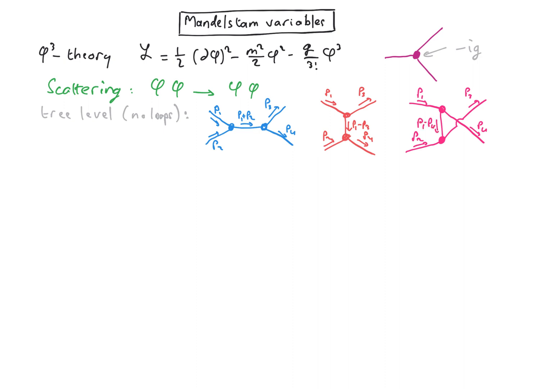To determine the momenta of the internal lines, we simply use the energy momentum conservation at one of the vertices, which comes from one of the Feynman rules, and that naturally gets rid of the integral over the internal momenta, which is another of the Feynman rules. So as a result, we can write the amplitudes for each of these diagrams.